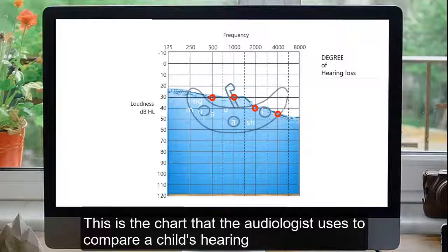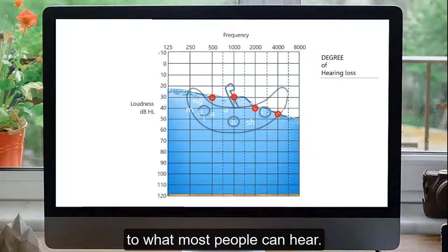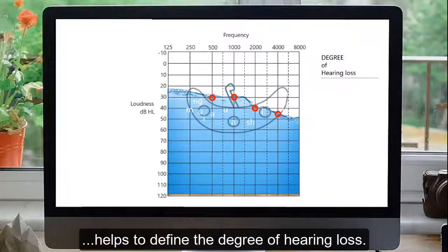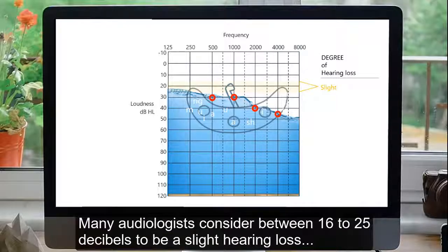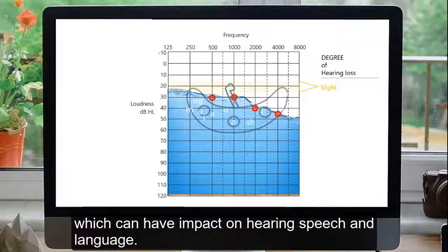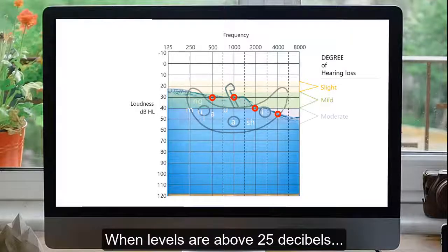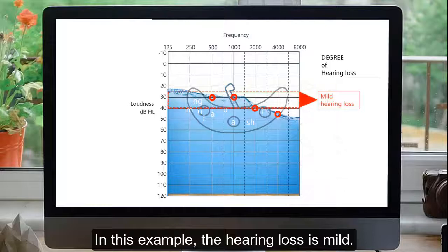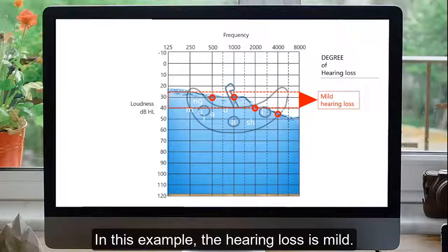This is the chart that the audiologist uses to compare a child's hearing to what most people can hear. Where the waterline falls across the first three thresholds shown here helps to define the degree of hearing loss. Many audiologists consider between 16 to 25 decibels to be a slight hearing loss, which can have impact on hearing speech and language. When levels are above 25 decibels, the hearing loss might be mild, moderate, moderately severe, severe, or profound. In this example, the hearing loss is mild.